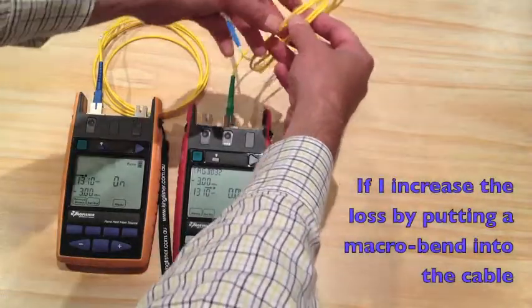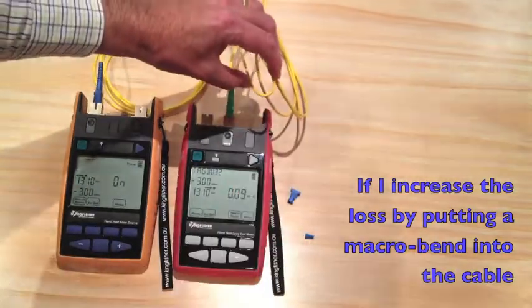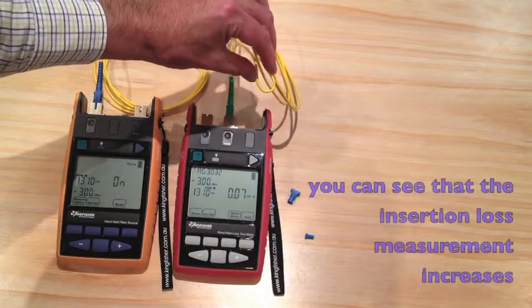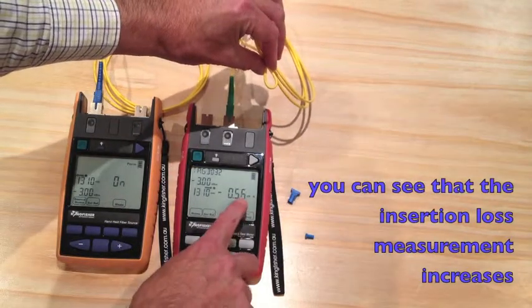If I increase the loss by putting a macro bend into the cable, you'll see that the relative loss reading will increase.